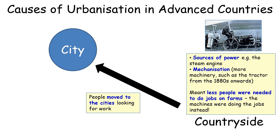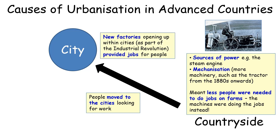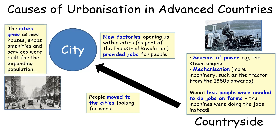At the same time as this agricultural change or revolution, within the cities, the Industrial Revolution was taking place. Lots of factories were opening up and these new factories provided jobs for the people who were moving from the countryside. This meant that cities grew greatly in size. New houses, shops, and services were built for the expanding population. So this urbanisation in advanced countries was from the 1780s onwards.